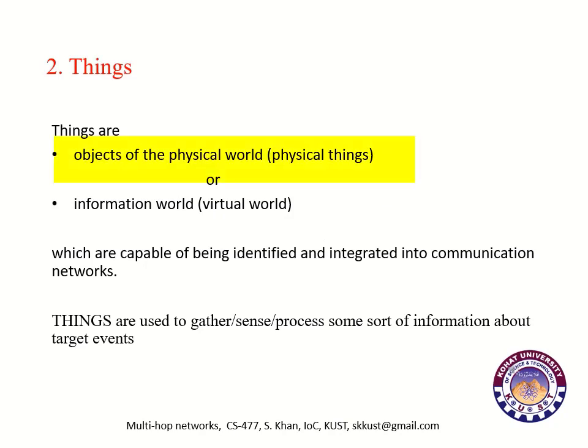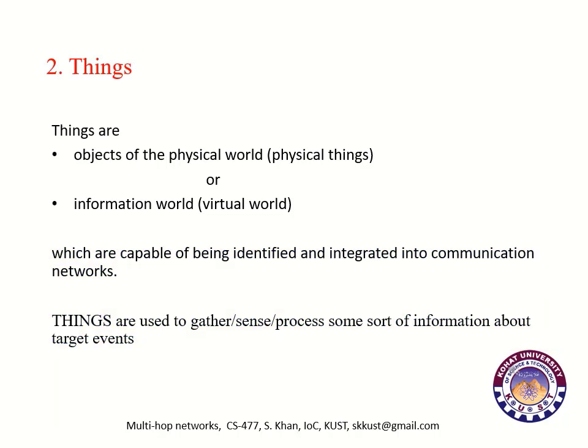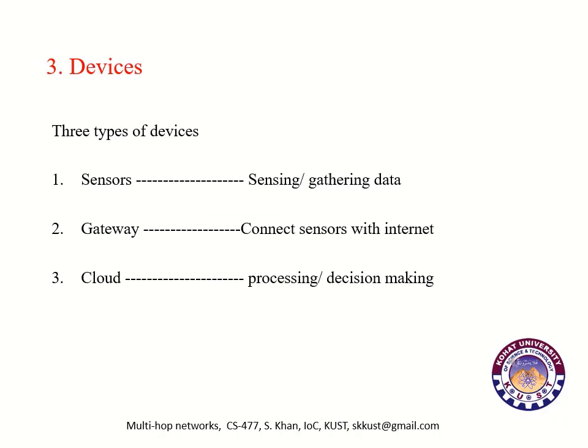Things are basically objects of the physical world — meaning physical things — or of the information world, that is the virtual world. Things are capable of being identified and integrated into a communication network. Things are used to gather, sense, and process some sort of information about target events. There may be many different target events which we will discuss later on.